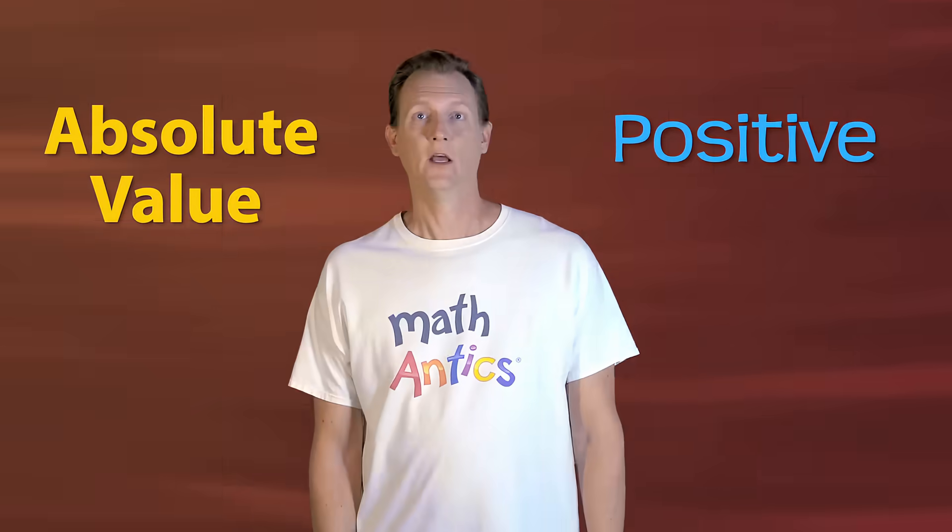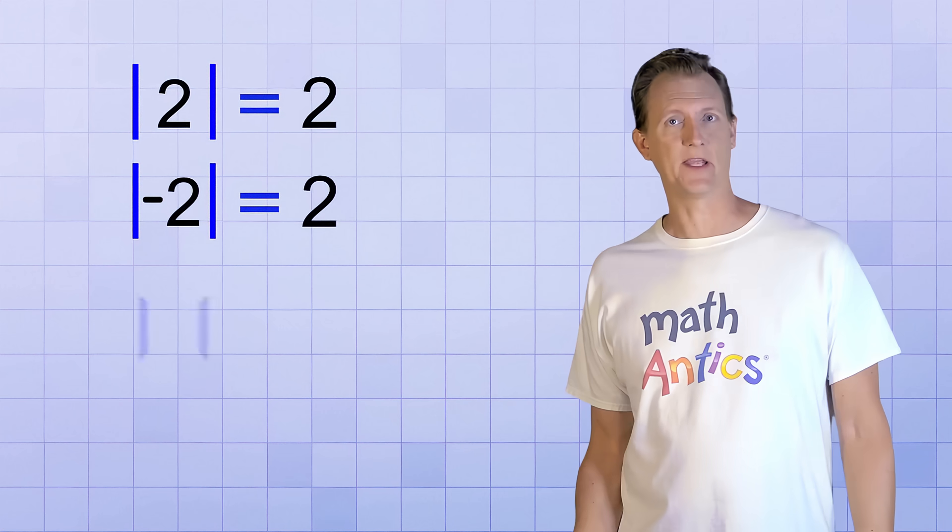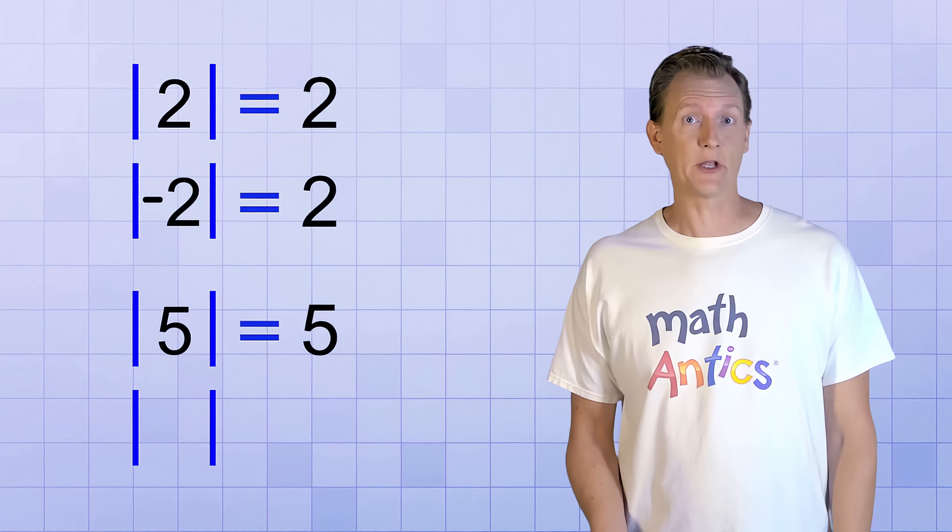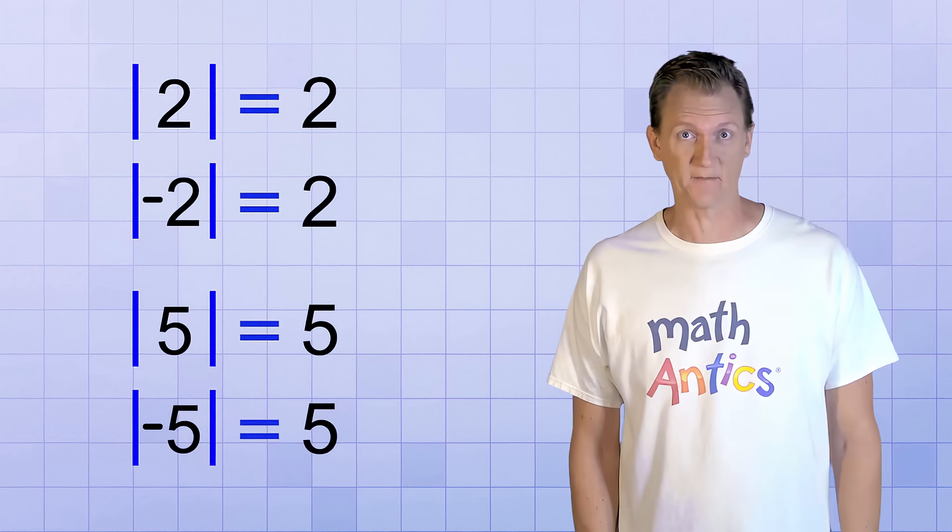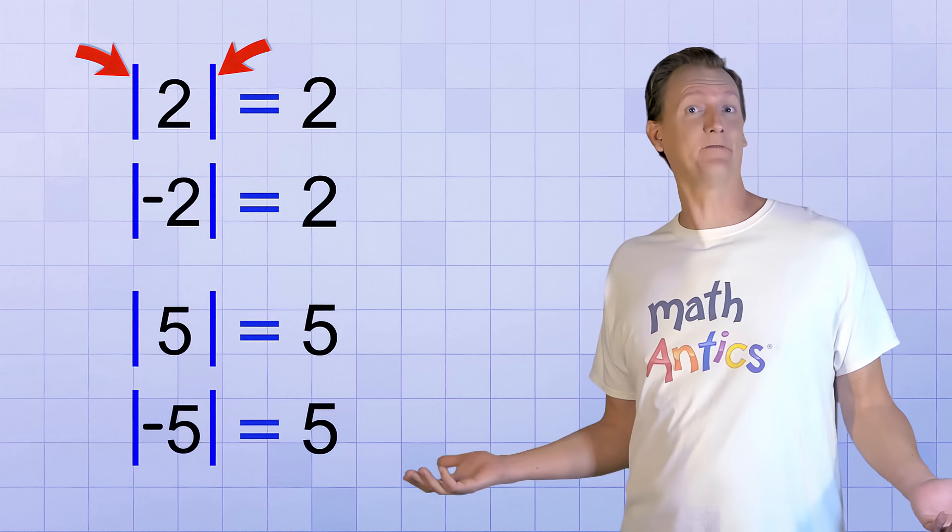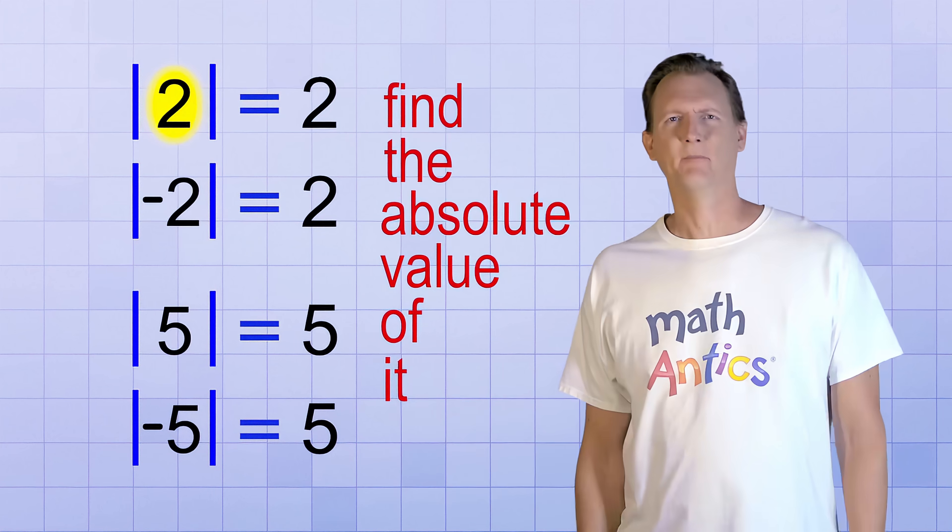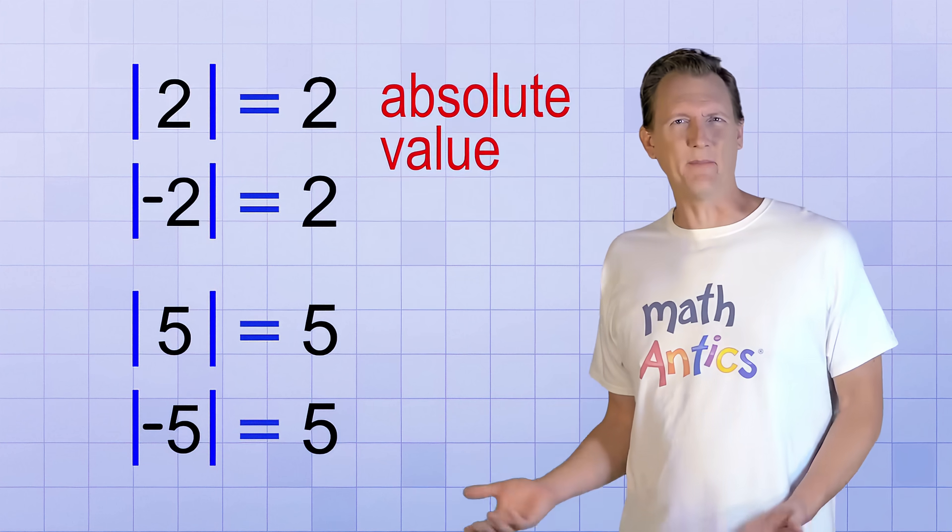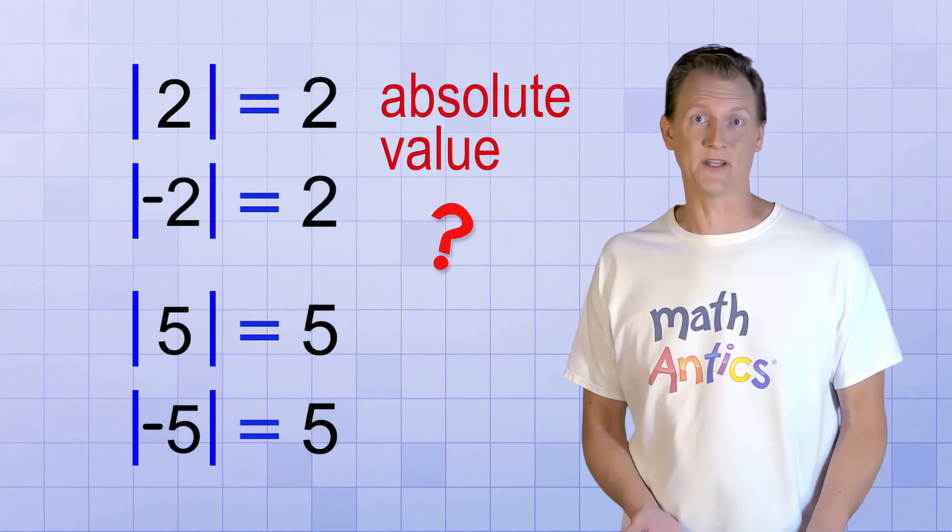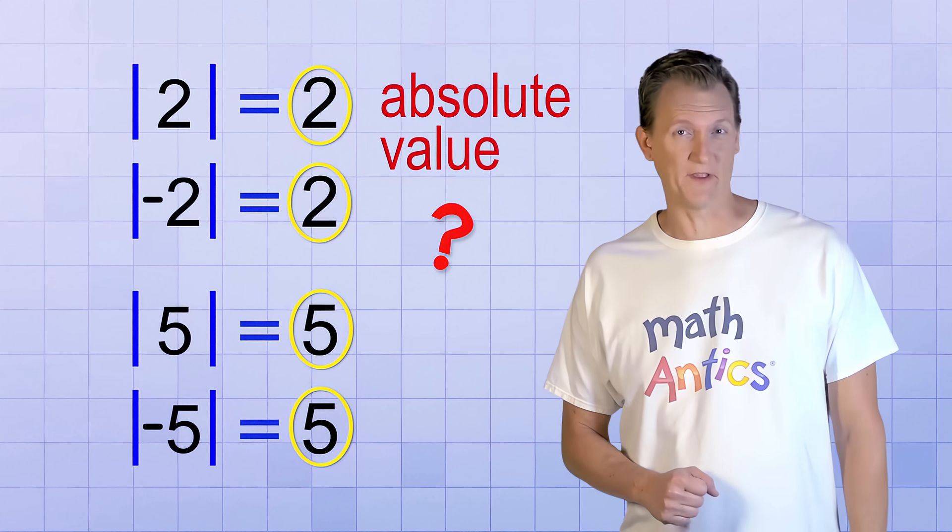It seemed like just a way to turn a negative number into a positive one. For example, the absolute value of 2 is 2, but the absolute value of negative 2 is also 2. The absolute value of 5 is 5, but the absolute value of negative 5 is also 5. See those vertical lines on either side of the numbers? That's the symbol used for absolute value. So when you see something in between those vertical lines, it means to find the absolute value of it. But what does absolute value even mean? From these examples, it seems like it's just the positive version of any number. Well, sort of, but it's a little more involved than that.